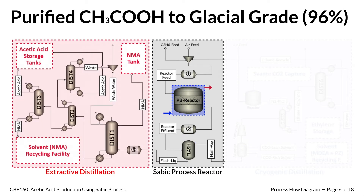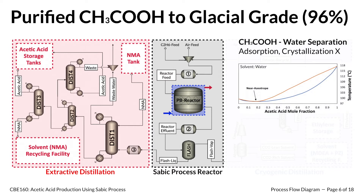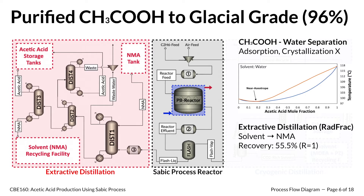Purifying acetic acid from water with a high recovery rate is extremely difficult, as the mixture forms a near-azeotrope at a mole fraction of approximately 0.23. In the red section, acetic acid is separated from water using N-methylacetamide solvent and extractive distillation columns with 18, 25, 25, and 35 trays respectively. Several methods including liquid-liquid extraction and adsorption were considered but rejected due to high operating and working capital costs. Ultimately, by using extractive distillation columns, we can obtain glacial-grade acetic acid with minimal loss to the waste stream.